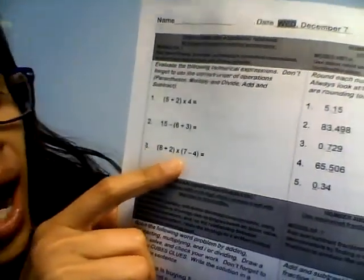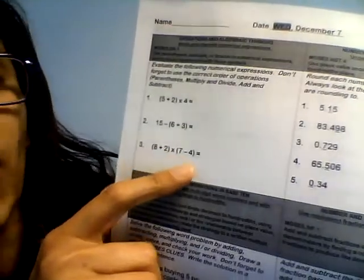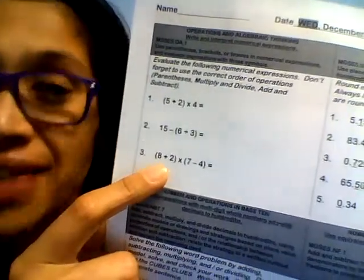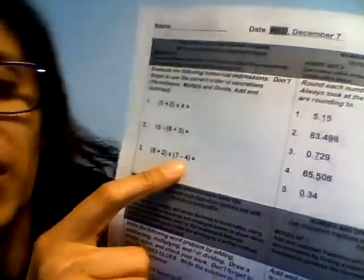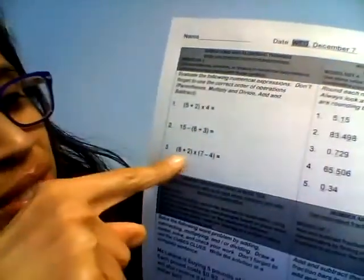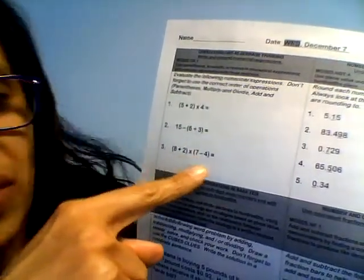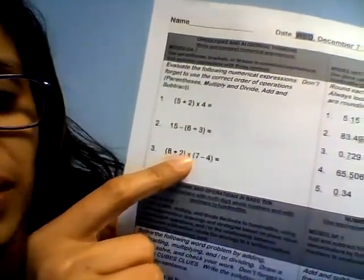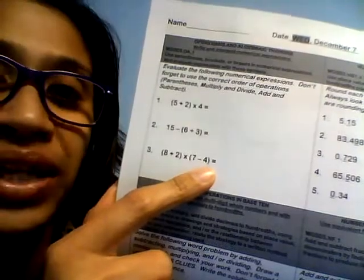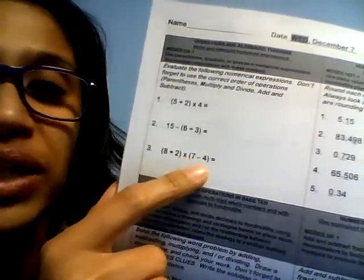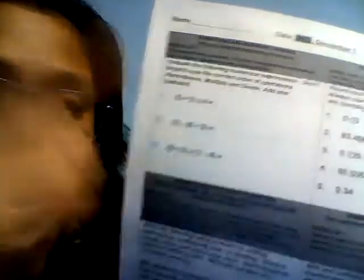Number three. What does that say? Eight plus two in the parentheses times seven minus four in the parentheses. So let's start right here. Eight plus two is ten. And then seven minus four is — did I say 30? Rewind. Eight plus two is ten. Seven minus four is three. And ten times three is 30. Done with that.